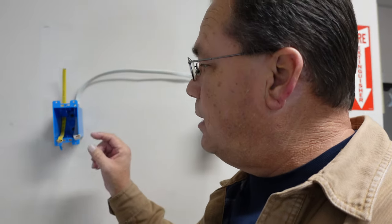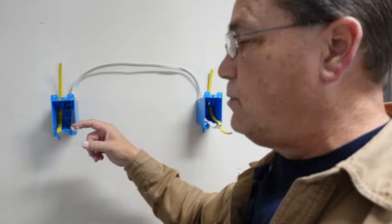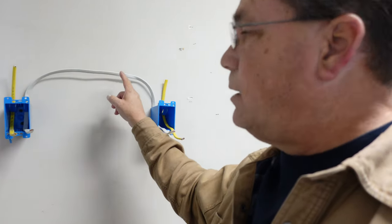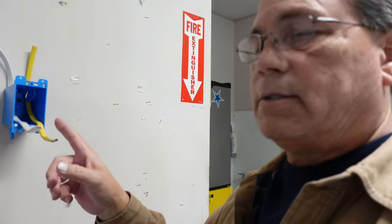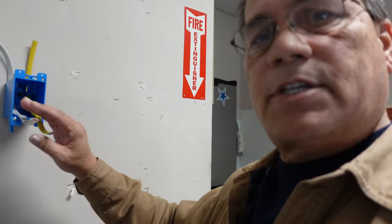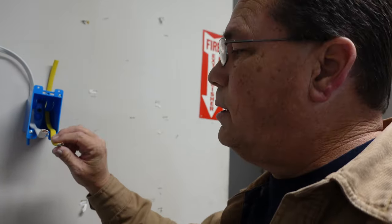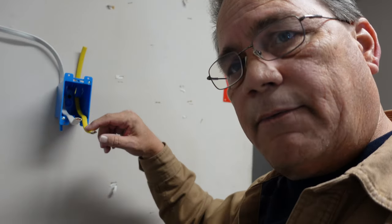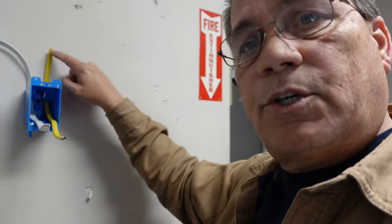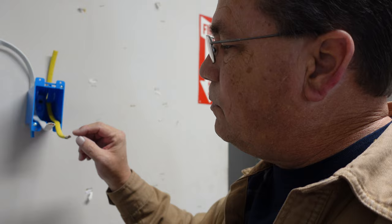The other two screws on your switch are brass. They're the travel legs. They get the black and the red off of your travel circuit that goes over to the other box. And then you're going to do the same thing on the other box. The difference is that you're putting power out of this terminal, or out of this wire, and it's going to a light fixture. But the concept is the same.